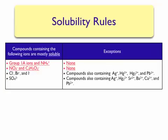The last ion in the soluble category is the sulfate ion. Most compounds containing the sulfate ion will be soluble in water. The exceptions include silver, mercury, lead, as well as strontium, barium, and calcium. An example is that calcium sulfate is insoluble in water; however, sodium sulfate is soluble in water.